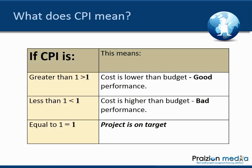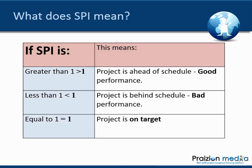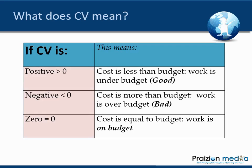For any index, remember: greater than 1 is good, less than 1 is bad, equal to 1 is on target. For CPI — Cost Performance Index — greater than 1 means cost is lower than budget, less than 1 means cost is higher than budget. For SPI — Schedule Performance Index — greater than 1 means ahead of schedule, less than 1 means behind schedule, equal to 1 means on target.